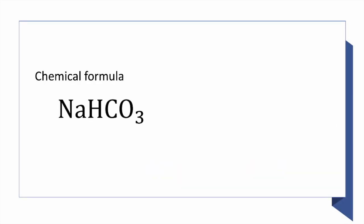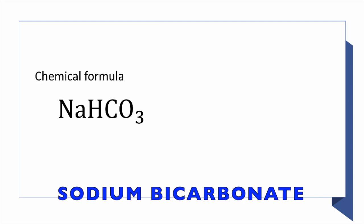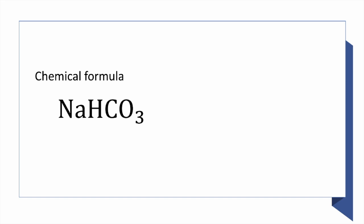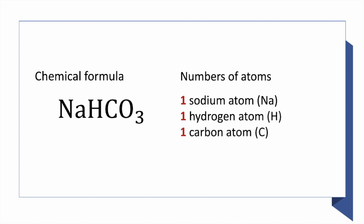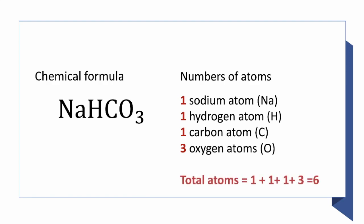Now let's do my favorite chemical, sodium bicarbonate, otherwise known as baking soda. We don't have a subscript in front of the sodium (Na), so that is one sodium atom. We also don't have a subscript in front of the H, so we have one hydrogen atom. We don't have a subscript in front of the C, so there's only one carbon atom. But we do have a subscript 3 in front of the oxygen, which means we have three oxygen atoms.